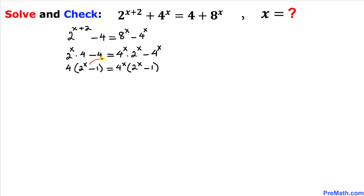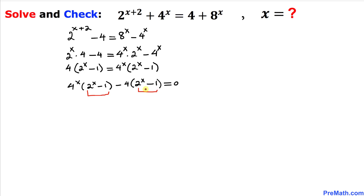Moving the left-hand side term to the right, we get 4 power x times 2 power x minus 1, minus 4 times 2 power x minus 1, equal to 0. Since 2 power x minus 1 is common, we factor it out and end up with 2 power x minus 1 times 4 power x minus 4 equals to 0.